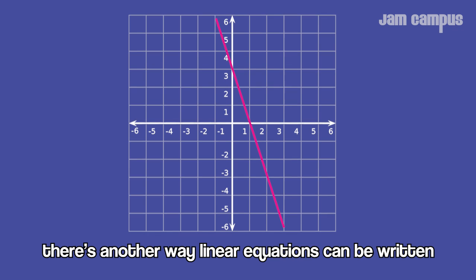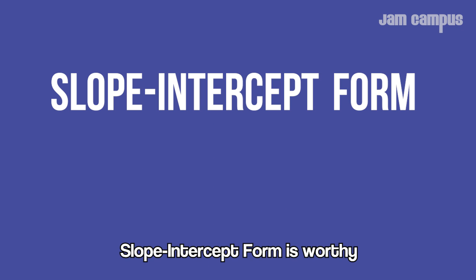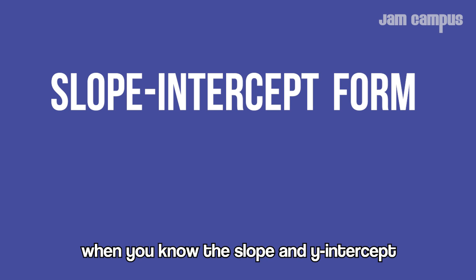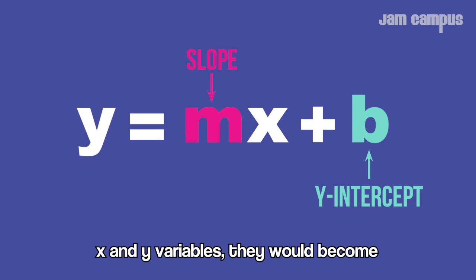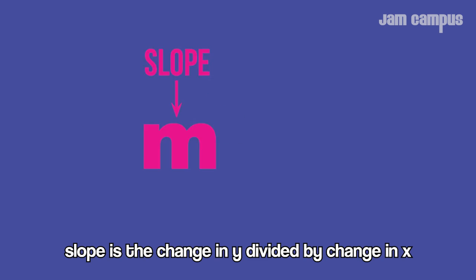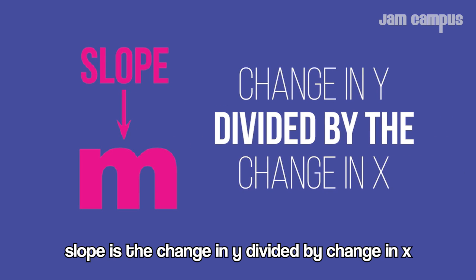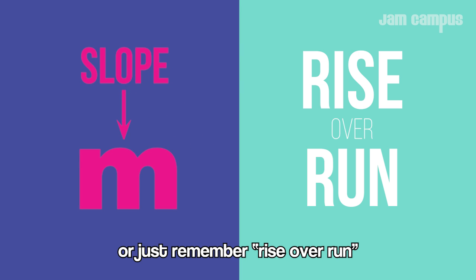There's another way linear equations can be written: slope-intercept form. This equation is helpful when you know the slope and y-intercept: y = mx + b, where m is the slope and b is the y-intercept. Slope is the change in y divided by the change in x—just remember rise over run.